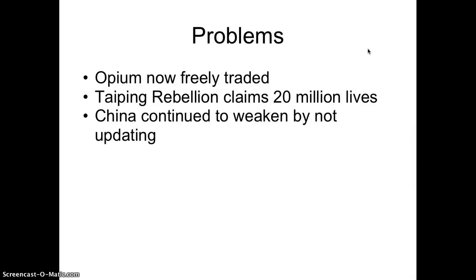After the Opium War of 1839, opium was freely traded in China, and the people were very upset, feeling their emperor wasn't doing enough to resist the corruption and negative influence of the Europeans. The Taiping Rebellion broke out and lasted about 30 years, claiming 20 million lives — compare that to roughly 6 million in the Holocaust during World War II. This is a major world history event that doesn't often get brought up in Western civilization classes. The Chinese people were also resistant to modernizing because they resented the ways of the West, including modernization and industrialization.